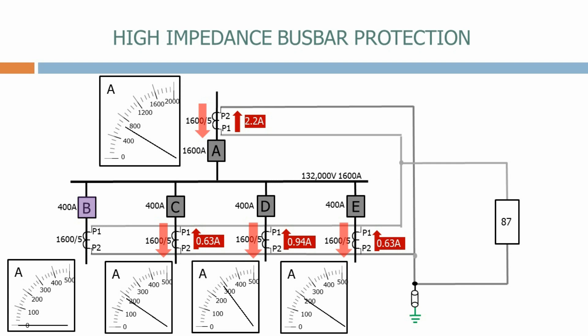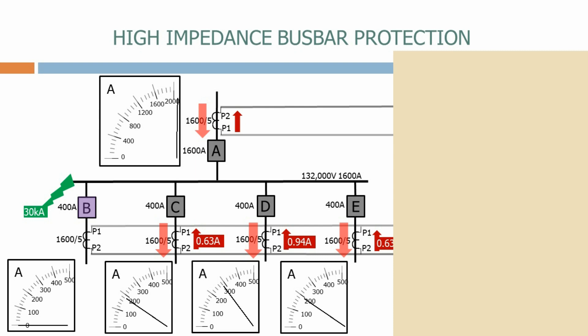Let's reset the system again and this time have a fault on the busbar with a rating of 30,000 amps. Looking at our CT secondary current again, for incomer A, the primary current equals the fault current which is 30,000 amps plus the original load current of 700 amps, equals 30,700 amps. This gives a secondary current of 95.9 amps. The other feeder currents remain unchanged.